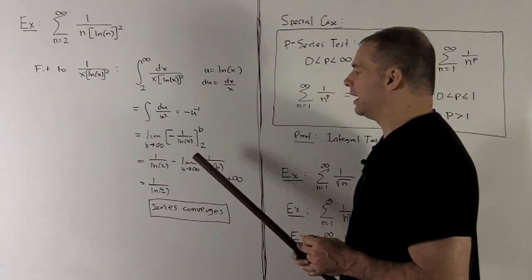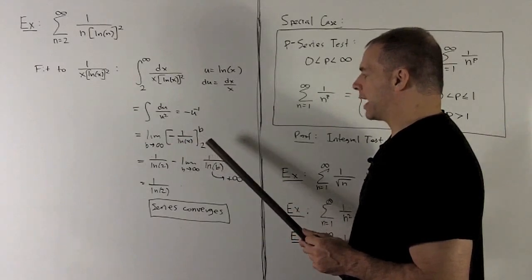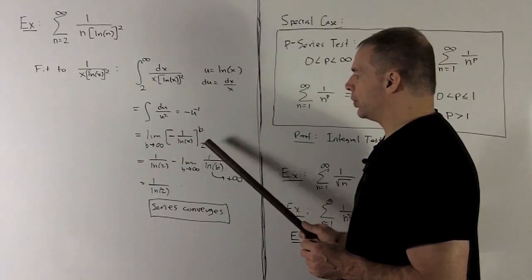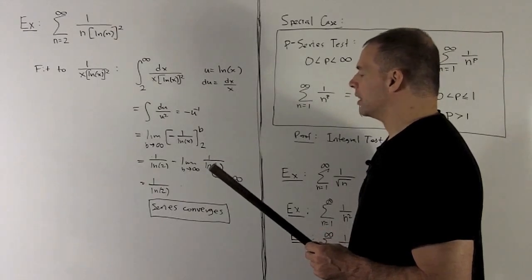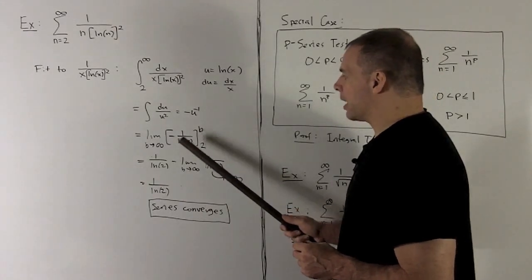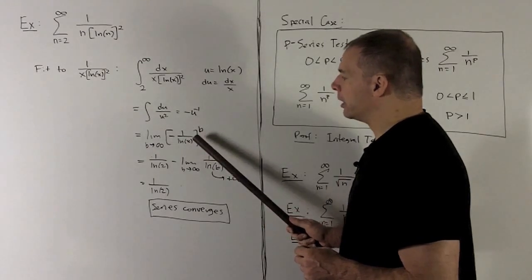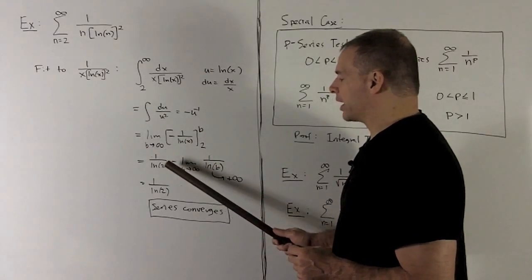So, I have limit, b goes to infinity, minus 1 over natural log of x from 2 to b. So, we're going to evaluate b and 2, and then take the difference. When I put these numbers in, the 2 is going to have a minus, minus natural log of 2. So, that will go out in front as 1 over natural log of 2.